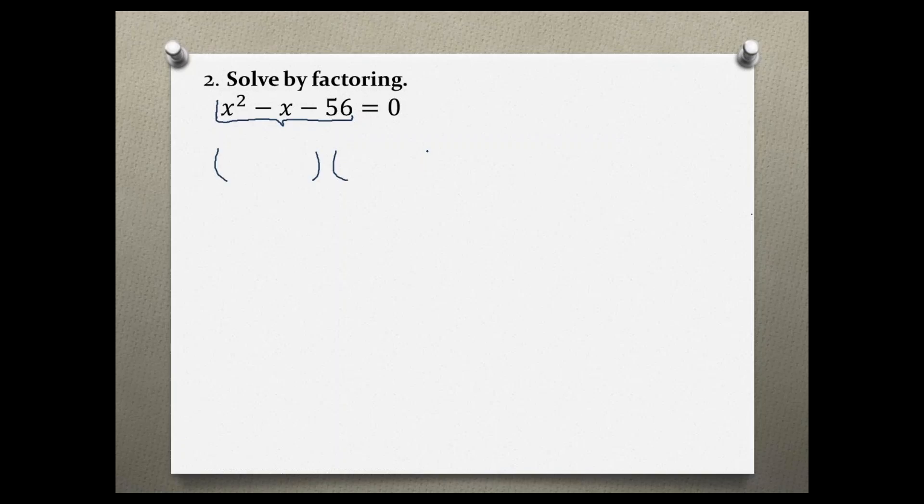I'm going to write my empty sets of parentheses, and then I'm going to square root the first term so I get x and x. I bring down my first sign which is a negative, multiply the two signs together to give me the second sign, and the negative times a negative gives me a positive.